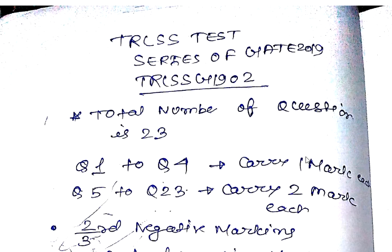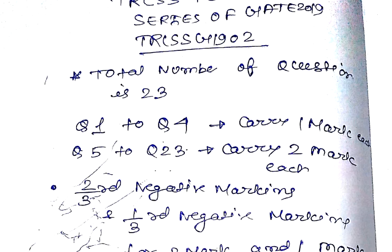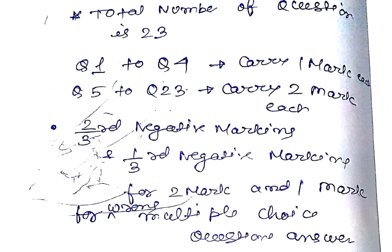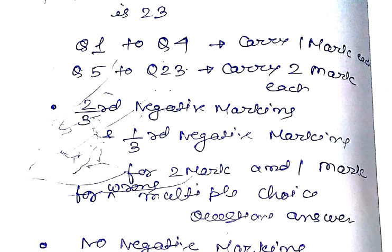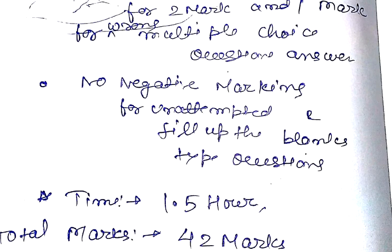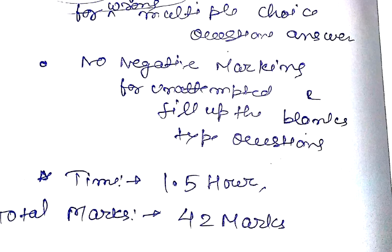Question number 5 to 23 carries 2 marks each. 2/3rd negative marking and 1/3rd negative marking for 2 marks and 1 mark questions for wrong multiple choice answers. No negative marking for unattempted and fill up the blanks type questions. Time is 1.5 hours. Total marks is 42.